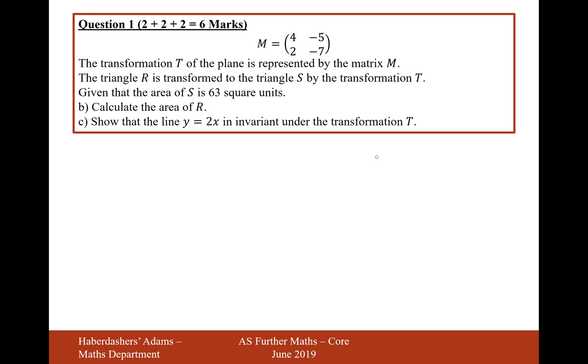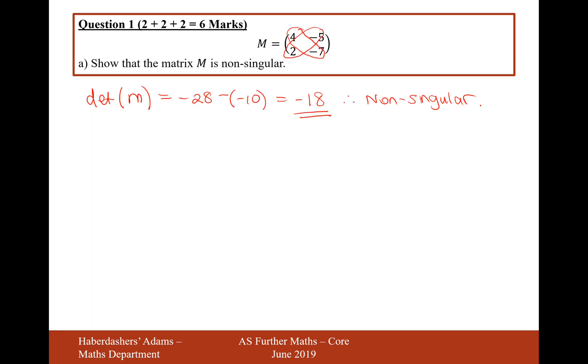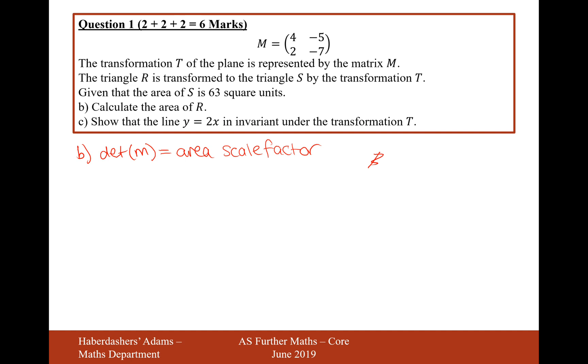So this is the bit of knowledge where the determinant of the matrix is equal to the area scale factor following a transformation. And if the area scale factor was, well, it's the modulus of the area scale factor. So it's going to be a scale factor of minus 18 modulus. That just means make it positive. So it's going to be 18.